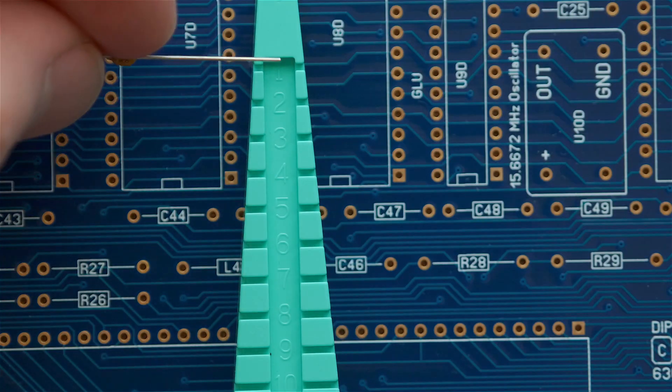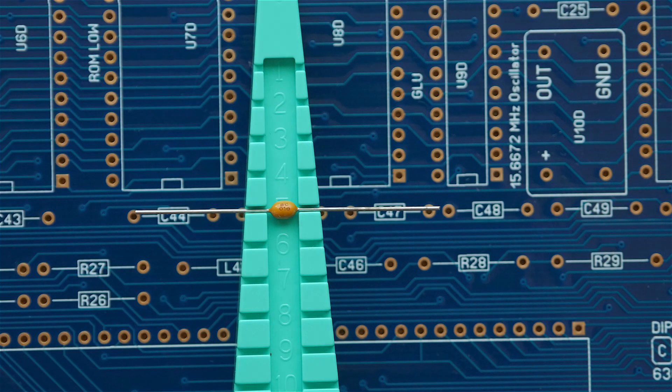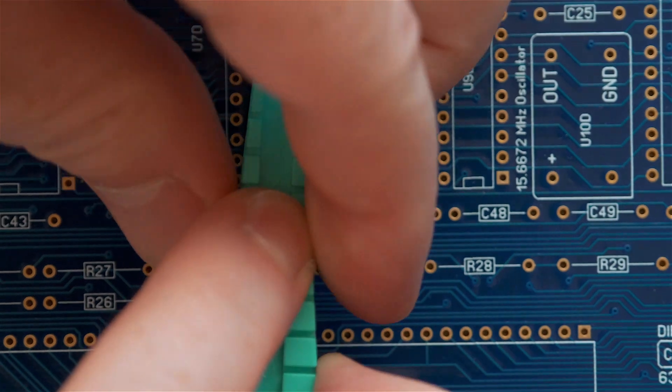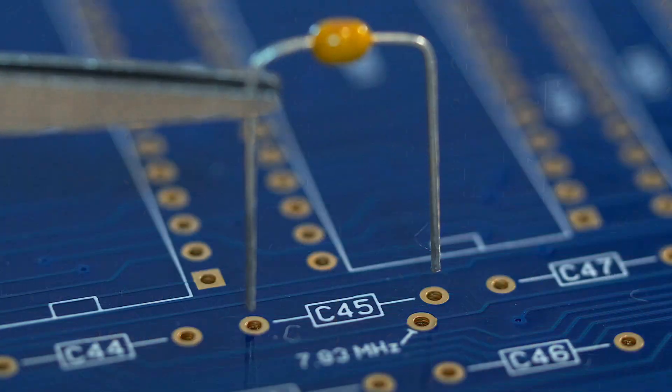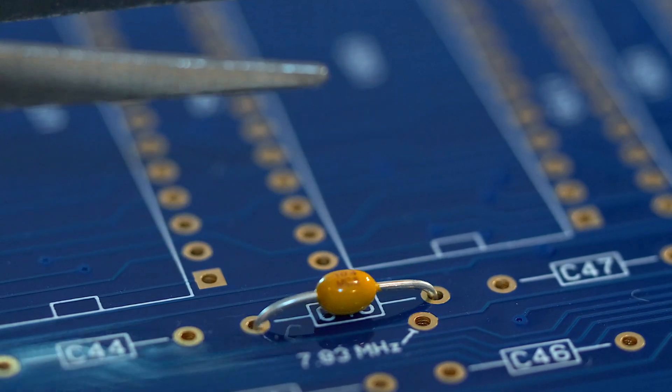And so that's one, two, three, four, five. We just slide him in there, and then push down, and then we just push down on the leads. Now our perfectly bent capacitor slides right in.